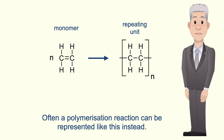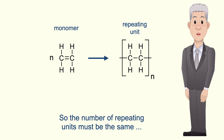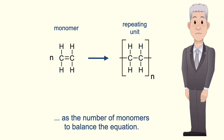Often a polymerization reaction can be represented with a lowercase n, which simply means a large number. So the number of repeating units must be the same as the number of monomers to balance the equation.